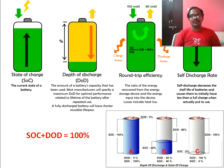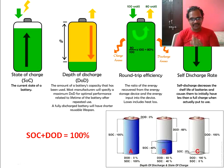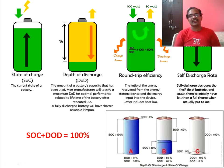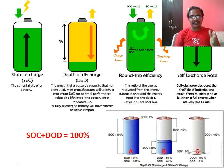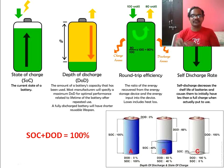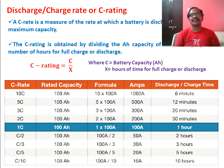An important thumb rule: state of charge plus depth of discharge always equals 100%. Case A — if the state of charge is 100%, the depth of discharge is 0%. Case B — if the battery is at 40% state of charge, the depth of discharge is 60%; SOC + DOD = 40 + 60 = 100%. If the battery is completely drained, the state of charge is 0% and the depth of discharge is 100%, giving 0 + 100 = 100%. So SOC + DOD always equals 100%.